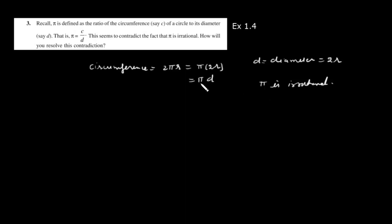So what will pi d be? When a rational number is multiplied by an irrational number, it becomes irrational. So this means that the circumference is an irrational number.